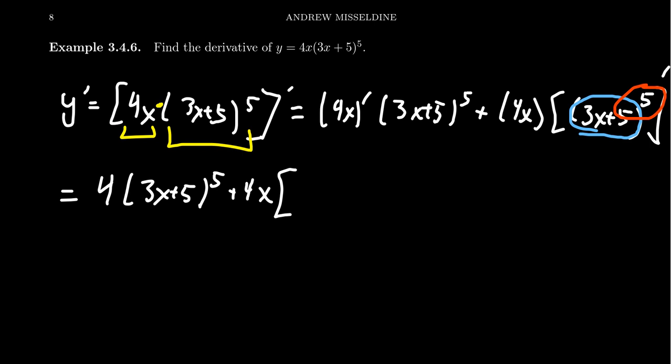By the power rule, the outer derivative is going to be 5 times 3x plus 5 to the fourth power. The power goes down by 1. Then we have to take the derivative of the inner function, the derivative of 3x plus 5, which is 3. It's perhaps the most common mistake for students to forget that inner derivative. You want to watch out for that.